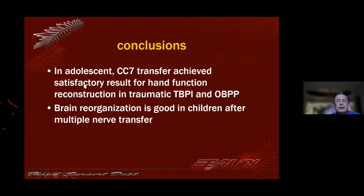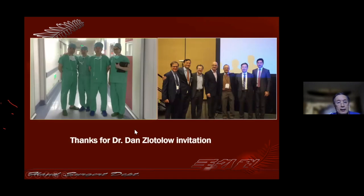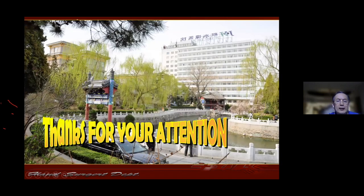In conclusion, with the contralateral C7 to repair hand function, good results can be achieved. Cortical reorganization after contralateral C7 transfer is good in children. Thanks for your attention.